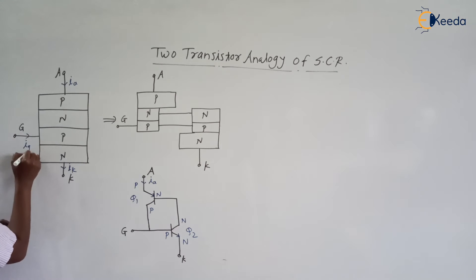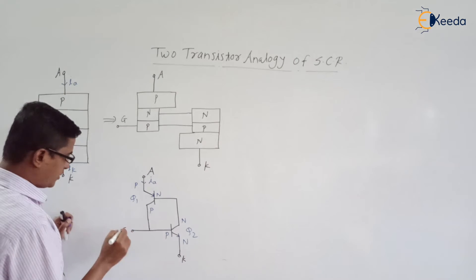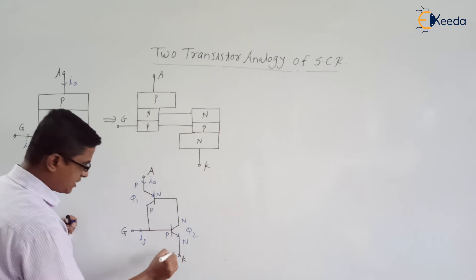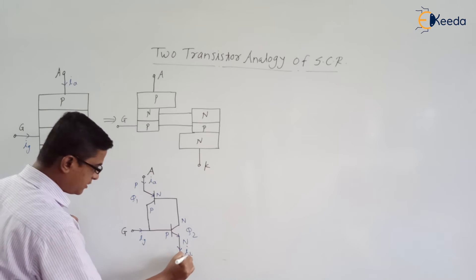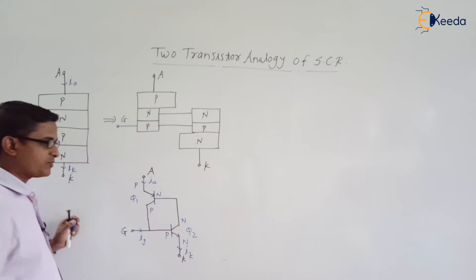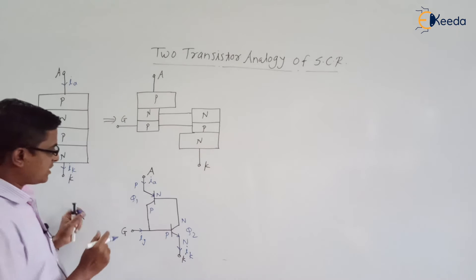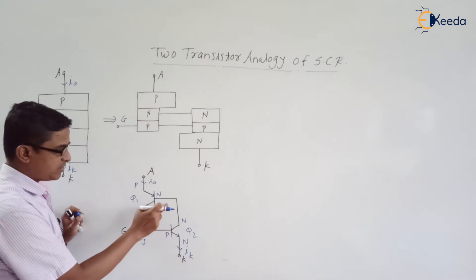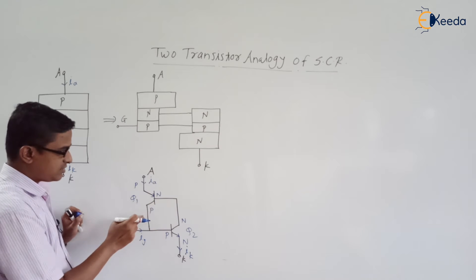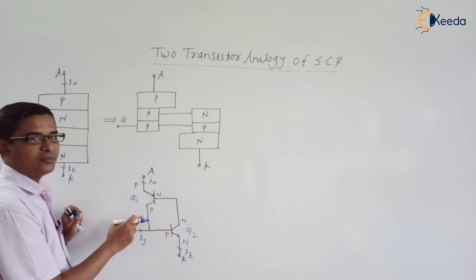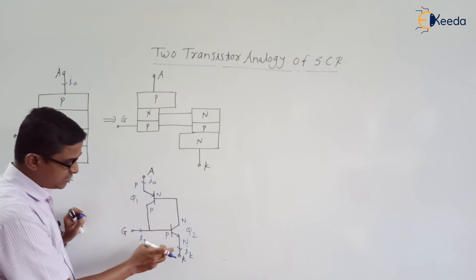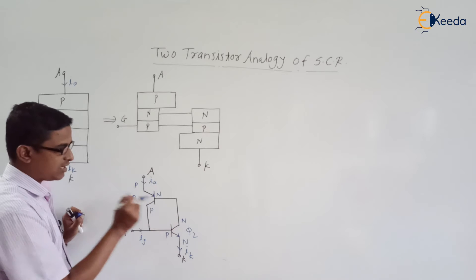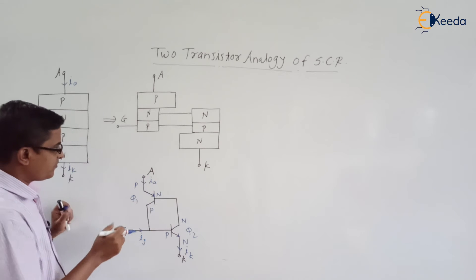This current is IG, this current is IA, this current is IK. We can say that this is the emitter terminal of transistor Q1, this is the base terminal, and this is the collector terminal. Similarly, for transistor Q2, this is the emitter terminal, this is the base terminal, and this is the collector terminal.